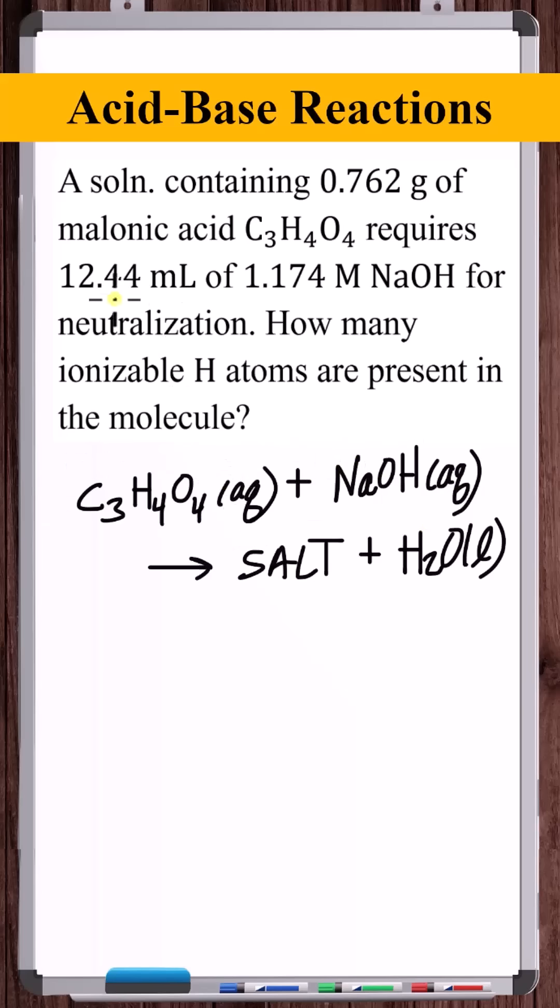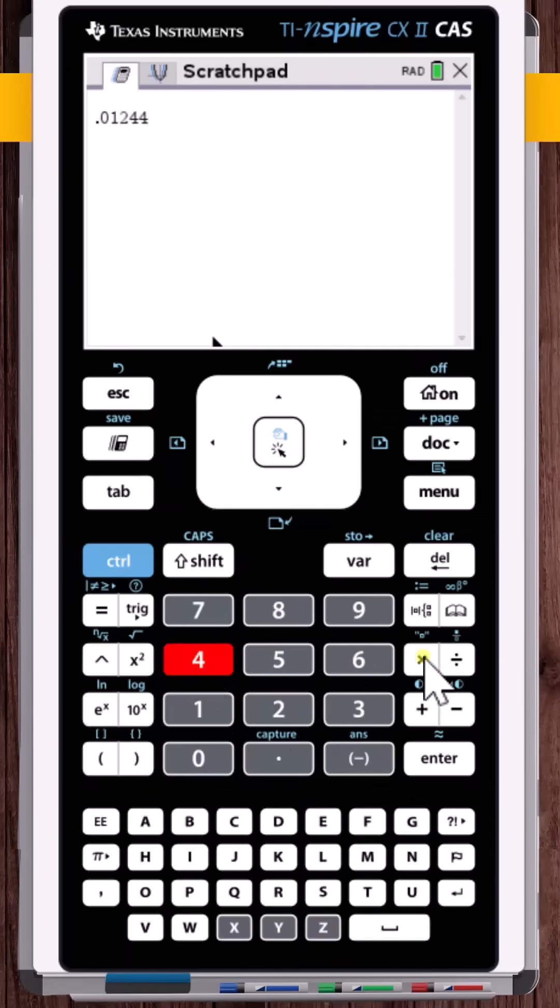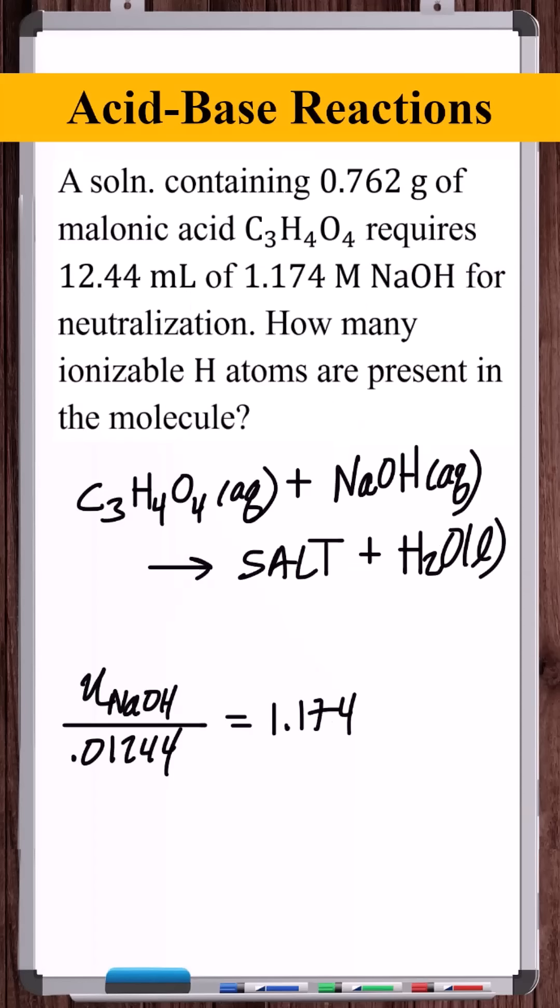For the moles of sodium hydroxide, we know that molarity is moles of solute per liter of solvent. So 0.01244 liters of sodium hydroxide solution with a 1.174 molarity. Cross-multiplying, 0.014605 moles of sodium hydroxide were added.